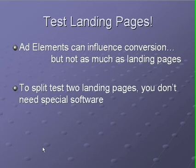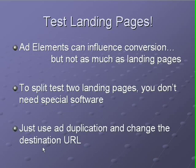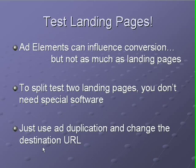To split test two landing pages, you may think that you need special software on your server, but you really don't. All you need to do is create two landing pages and split test them from the AdWords side. Just use the ad duplication technique and change the destination URL. If you have a top performing ad and a great landing page that's profitable, you might want to test that same ad with different landing pages — but maybe not send half your traffic to a new landing page. So do ad duplication: do an 80-20 split or a 90-10 split. With ad duplication, you have complete control of how many impressions you want to give to any test.